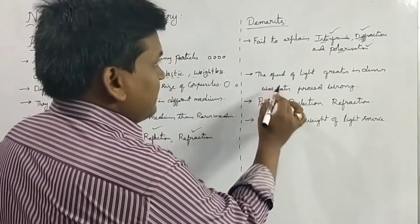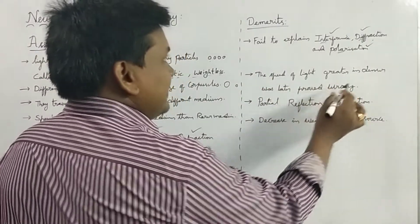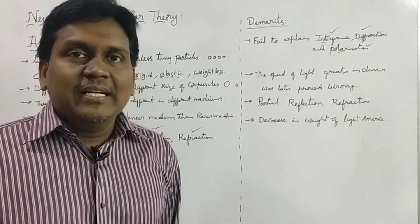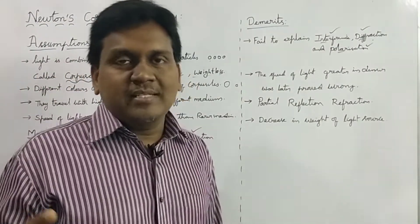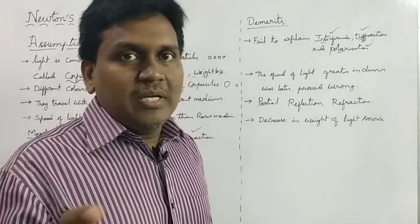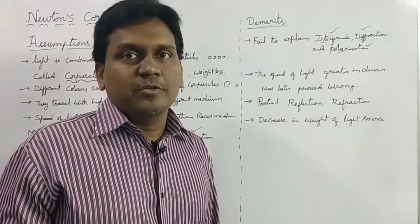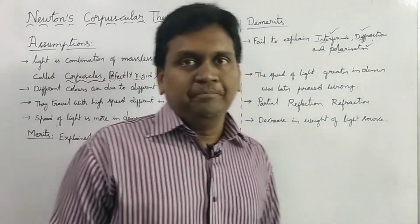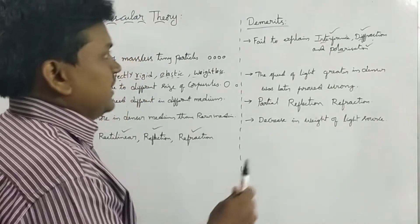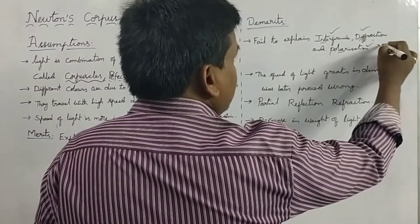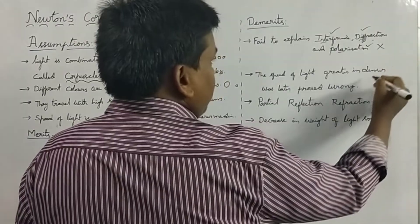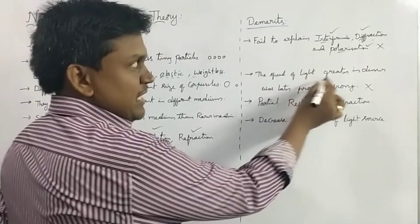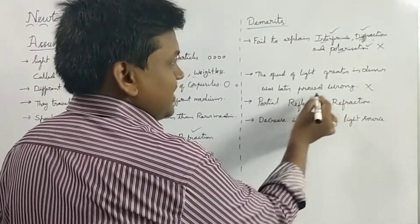Coming to another demerit: the speed of light being greater in denser medium was later proved wrong. Whatever he said — that light travels faster in denser medium — was later proved to be wrong. The speed of light is actually faster in rarer medium than in denser medium.